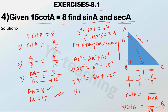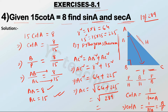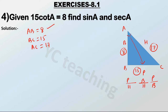AC square is equal to 64 plus 225, which equals 289. So AC is equal to 17. We now have AB equal to 8, BC equal to 15, and AC equal to 17.